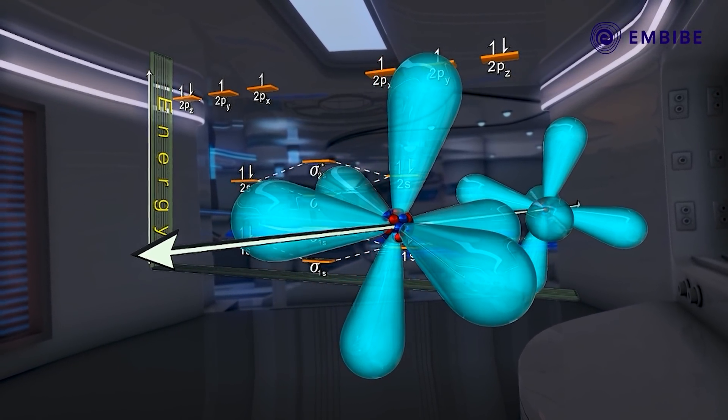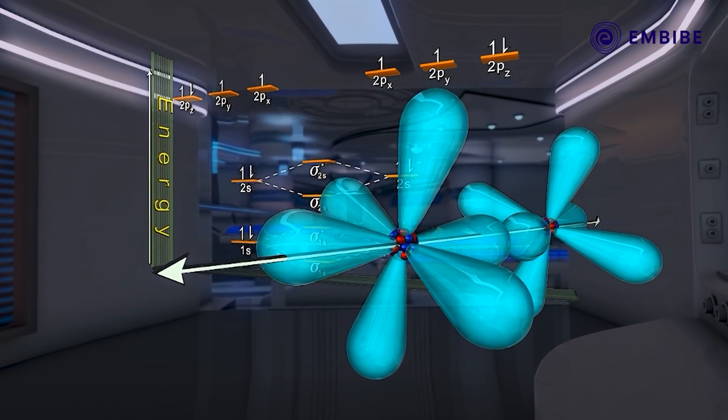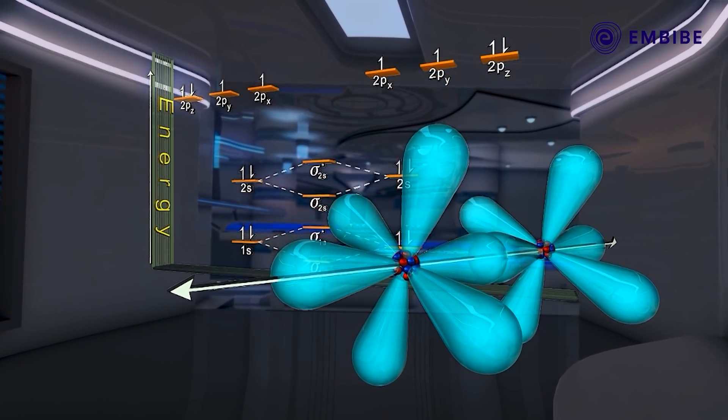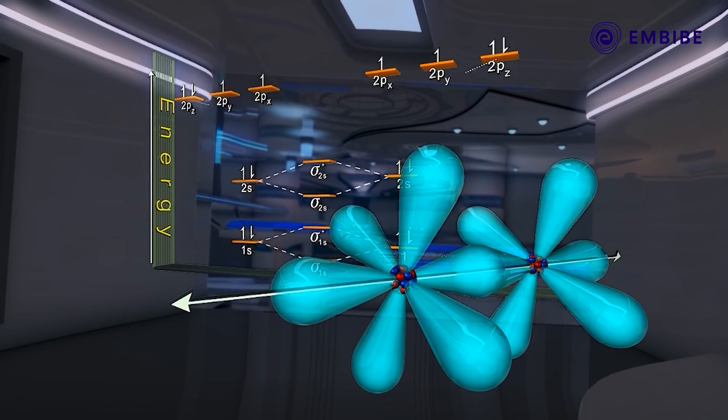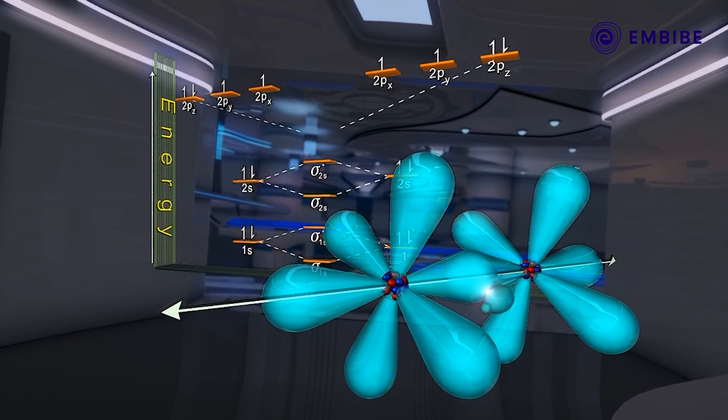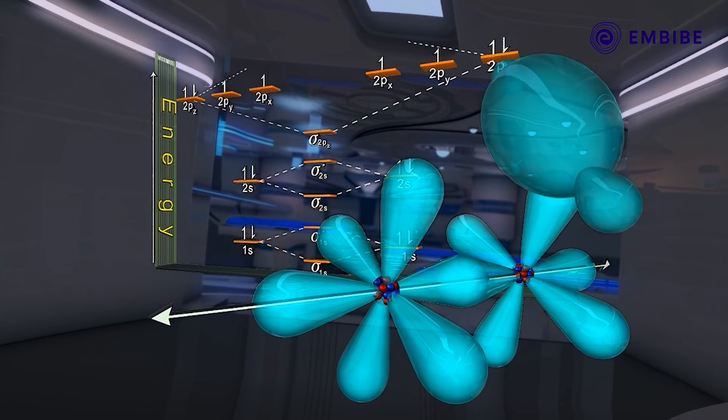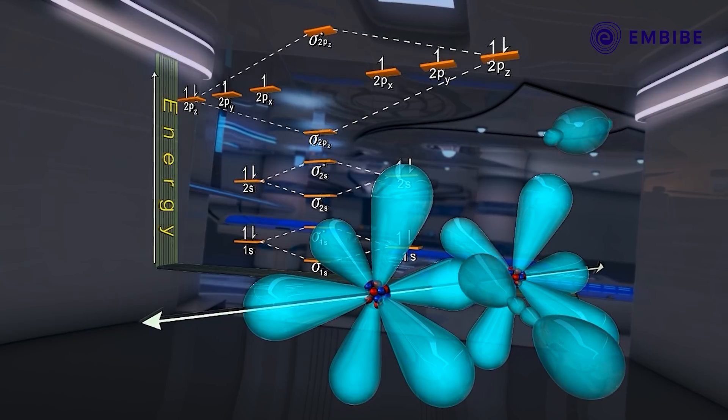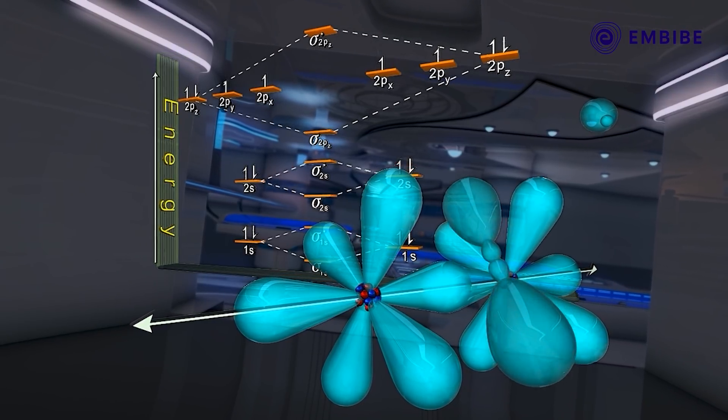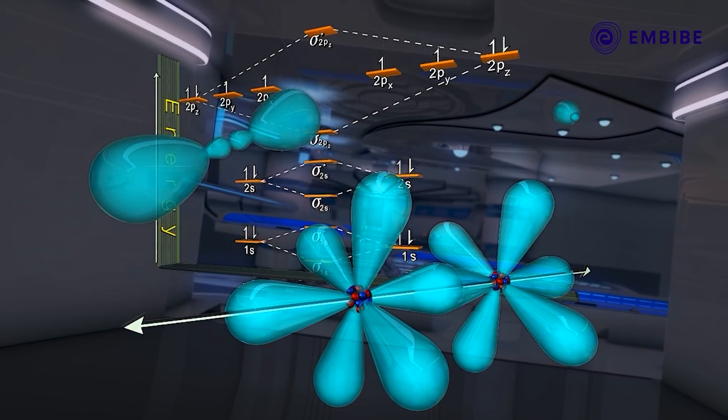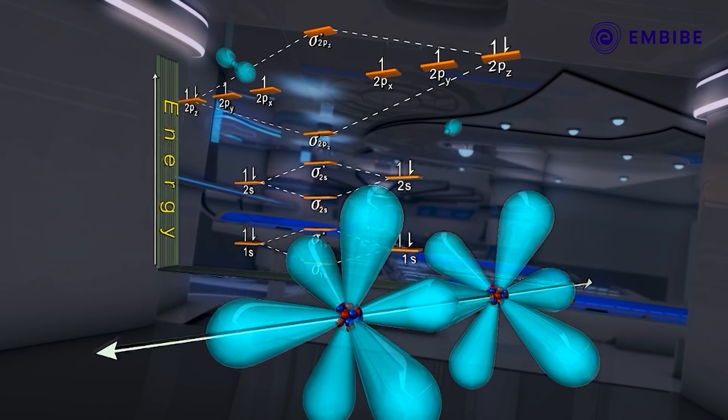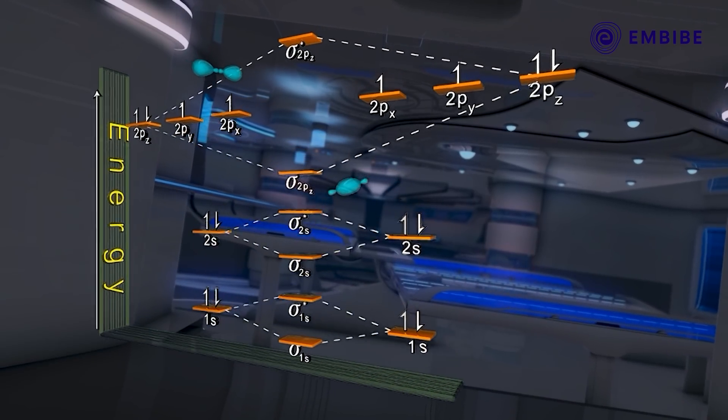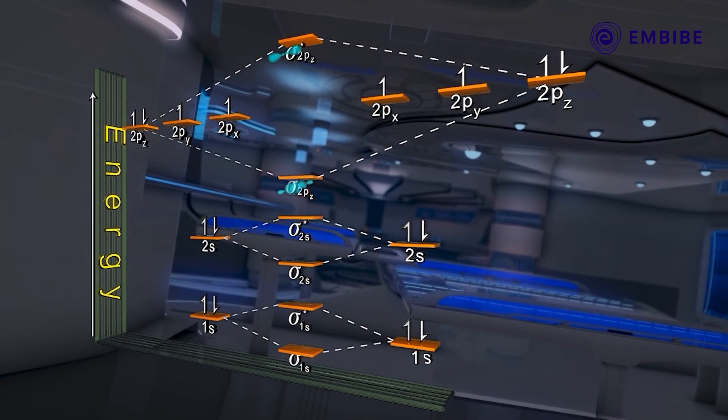Just as the s orbitals, the 2pz orbitals facing each other in a head-to-head fashion combine axially and form two molecular orbitals: the bonding σ2pz and the anti-bonding σ*2pz MO respectively. These orbitals can be arranged in the MO diagram as shown.